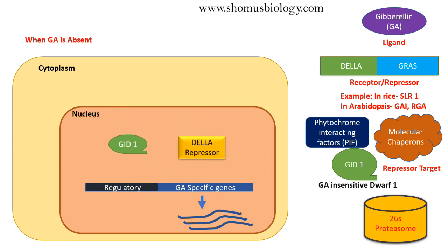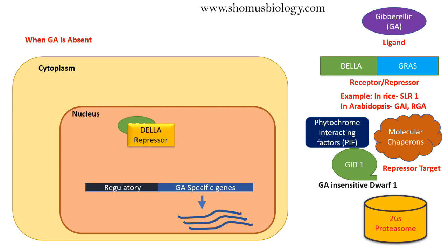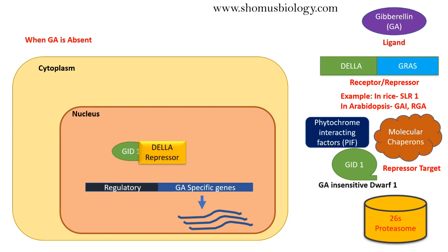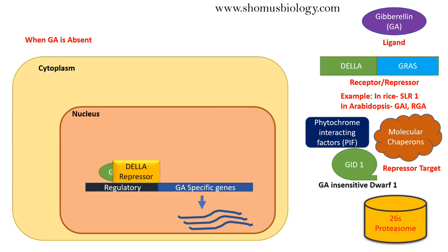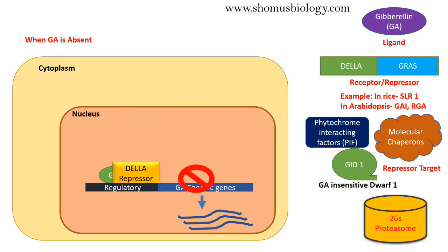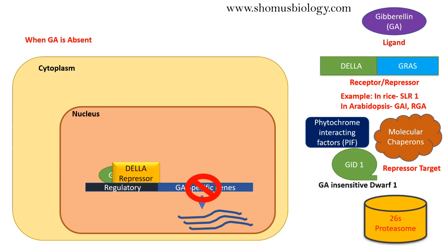Once the DELLA repressor is associated with GID1, it inhibits GID1 — the transcription factor responsible for GA-specific gene transcription. Then this DELLA repressor binds to the regulatory region and puts a stop to the GA-specific gene transcription. This is the situation when there is no gibberellic acid present.